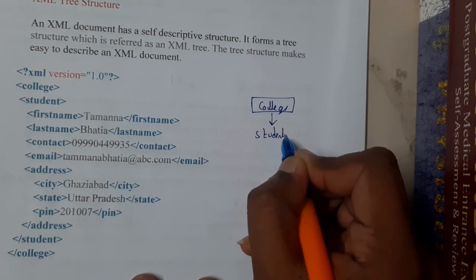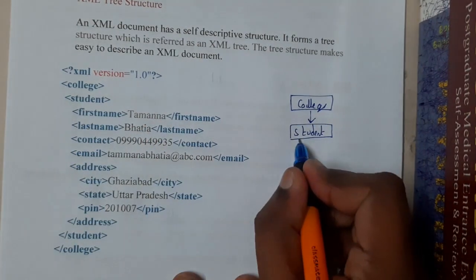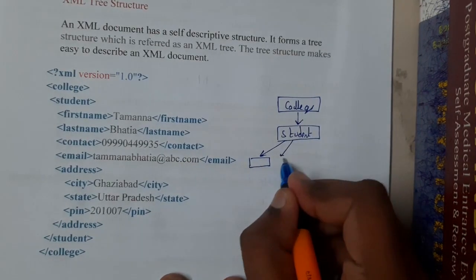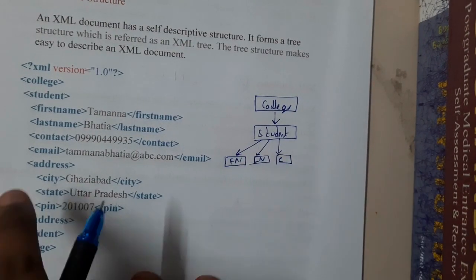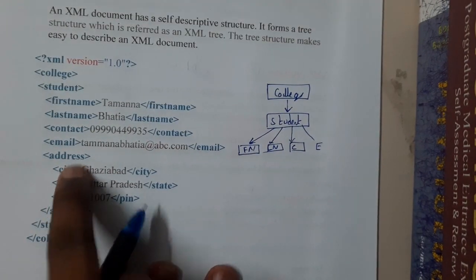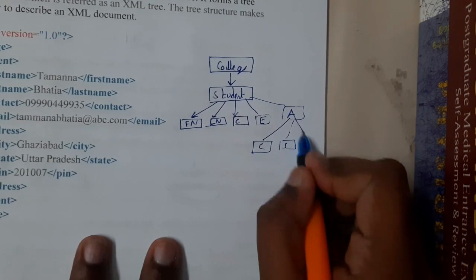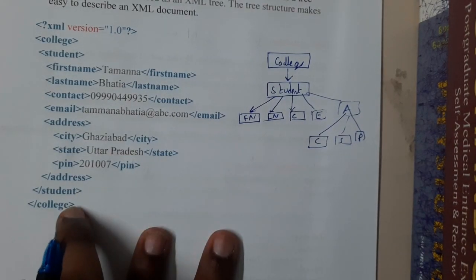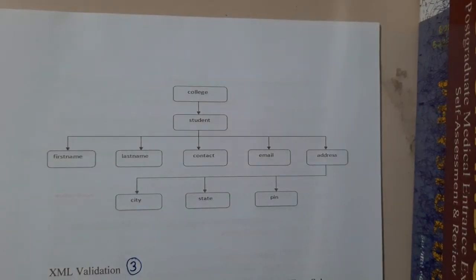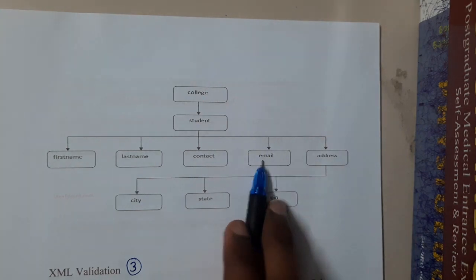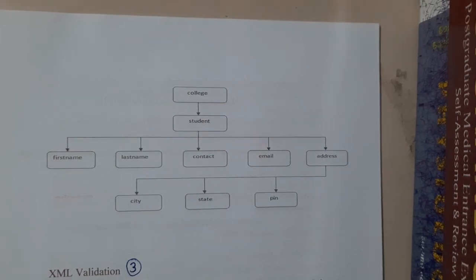Starting the tree: college is our parent node at the top. Inside college we have student. Inside student we have first name, last name, contact number, and email ID — each starting and ending at the same place as leaf nodes. We also have address, which is further divided into sub-elements: city, state, and pin code. So the full tree is: college → student → first name, last name, contact, email ID, address → city, state, pin code.